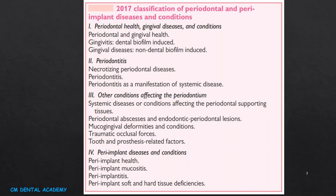In the 2017 classification, periodontitis was broadly categorized into periodontal health, gingival disease and conditions — including gingivitis (dental biofilm induced and non-dental biofilm induced). Periodontitis was subclassified as necrotizing periodontitis, periodontitis as a manifestation of systemic disease, and other conditions affecting the periodontal supporting tissues. Further categories include periodontal abscesses and endodontic-periodontal lesions, mucogingival deformities and conditions, traumatic occlusal forces, tooth and prosthesis-related factors, and peri-implant diseases and conditions — subcategorized as peri-implant health, mucositis, peri-implantitis, and soft and hard tissue deficiencies.